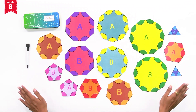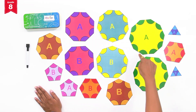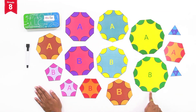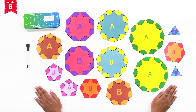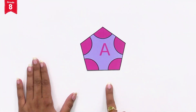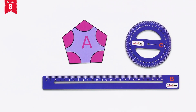Observe the polygon cards — there are two polygon cards of each type having the same number of sides, marked as A and B. Now let's pick a polygon card and find out whether it is a regular or an irregular polygon. I have picked the pentagon card A. Take out the ruler and protractor from the geometry kit.